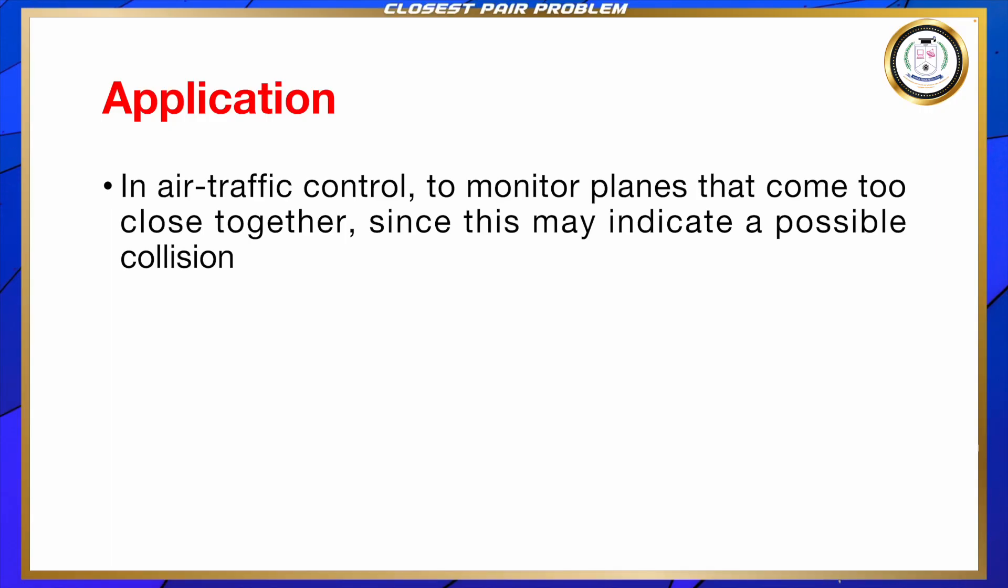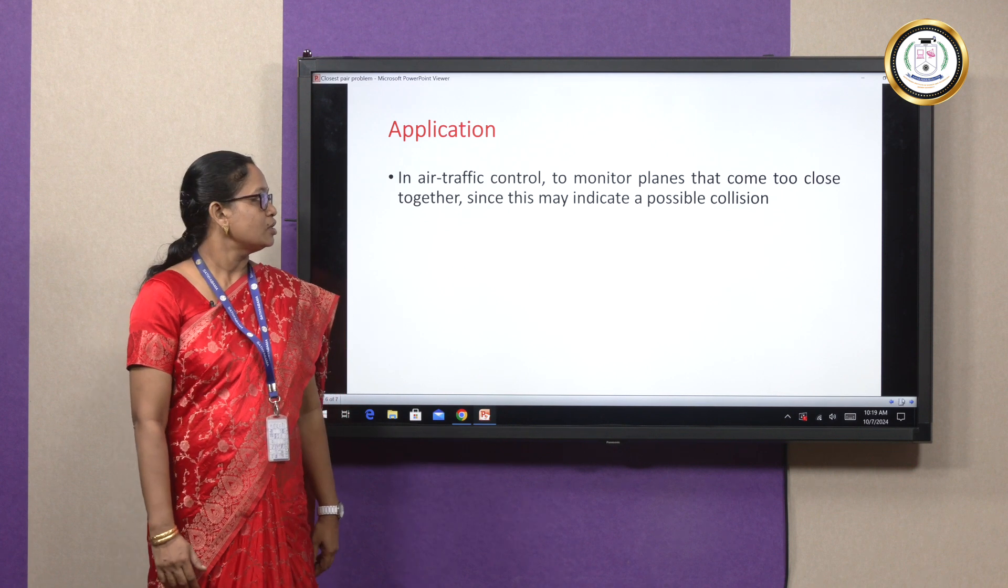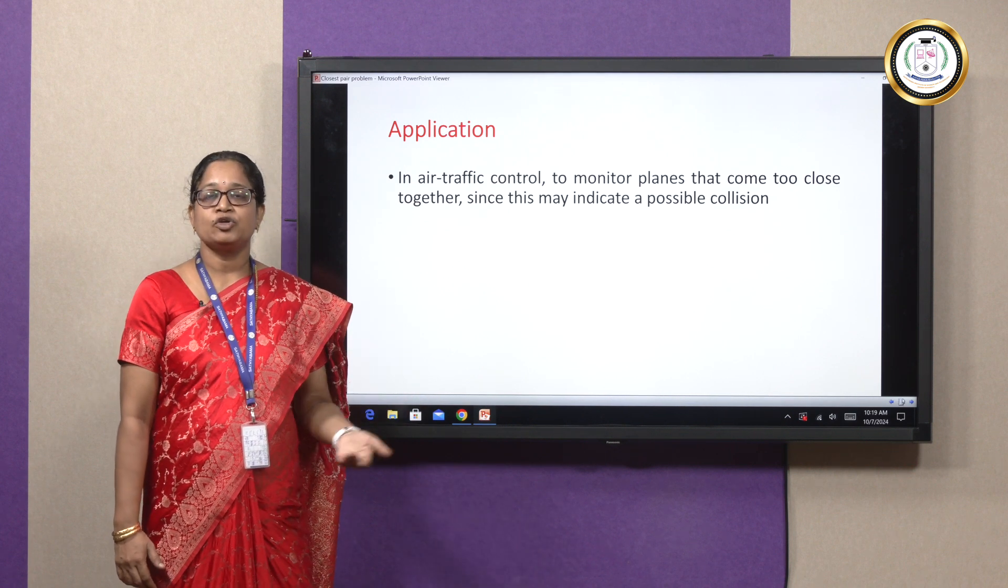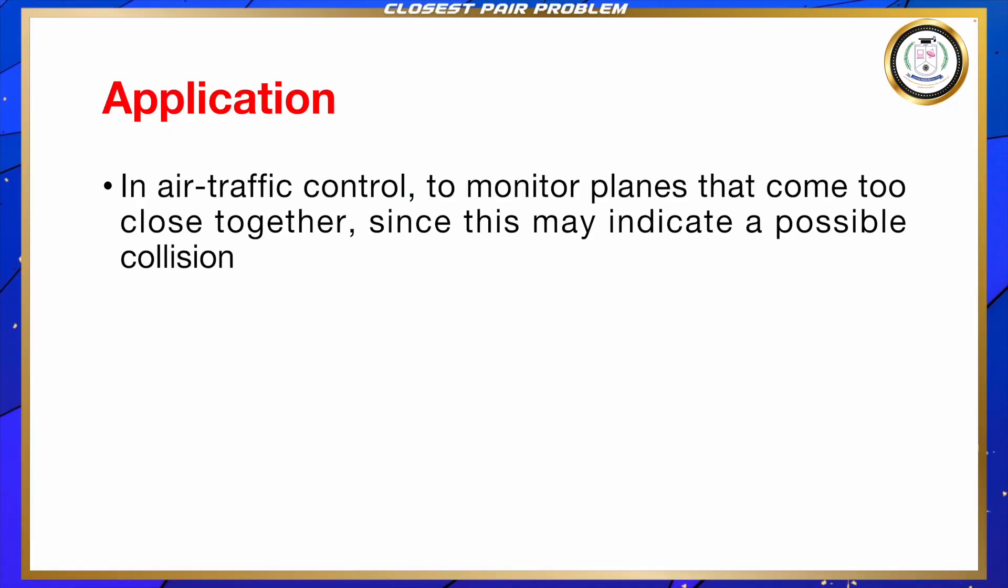The best real time application of closest pair problem is in air traffic control which is used to detect the planes that come closer together. This may indicate a possible collision and this is used to avoid collision. This is the best real time application and it is also used in many applications.